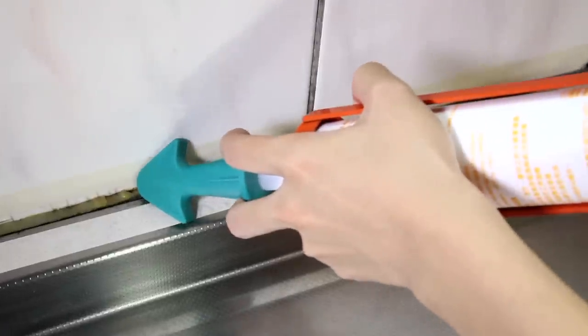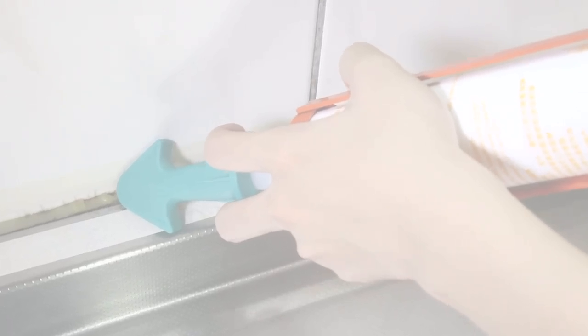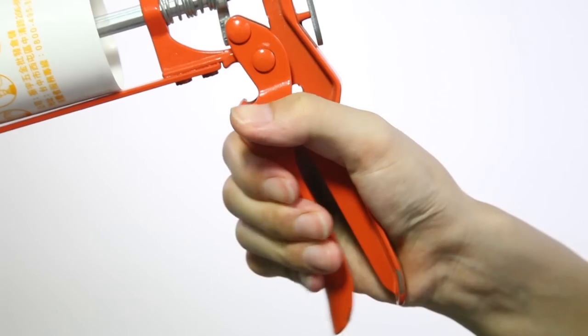Cling to the joint that you want to caulk. Squeeze the trigger of the caulking gun slowly.